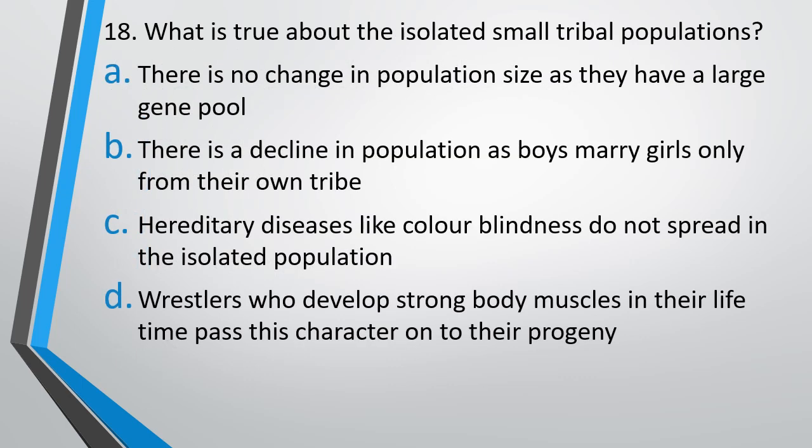Question number 18. What is true about isolated small tribal populations? Option A: No change in population size as they have a large gene pool. Option B: There is a decline in population as boys marry girls only of their tribe. Option C: Hereditary diseases like color blindness do not spread in isolated populations. Option D: Wrestlers who develop strong body muscles pass their character to their progeny. The correct answer is Option B — there is a decline in population as boys marry girls only from their own tribe.